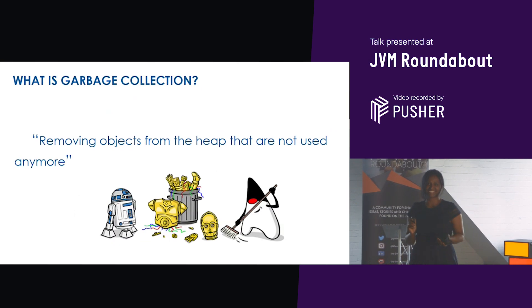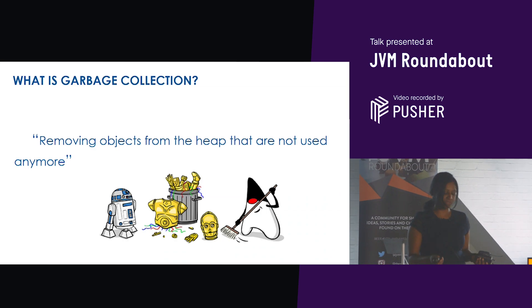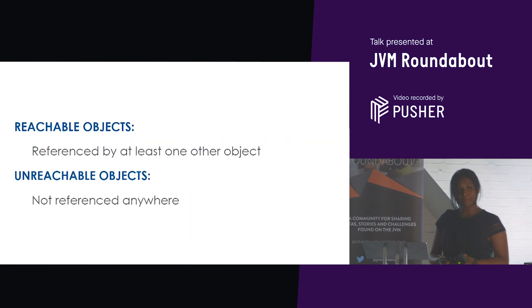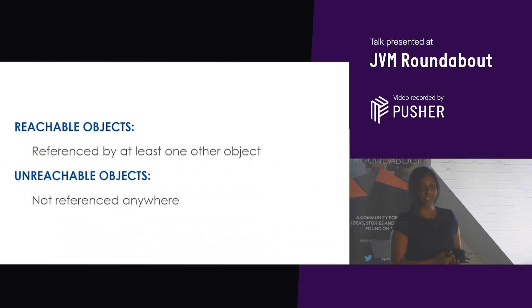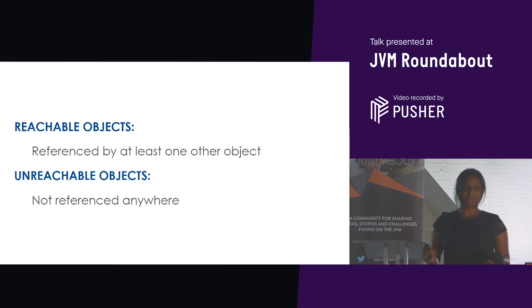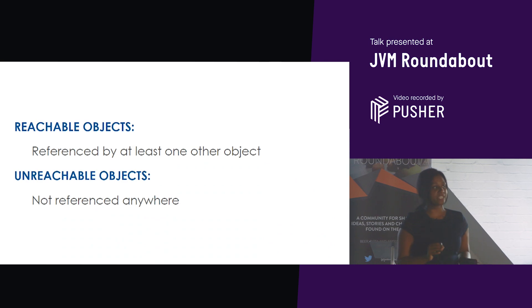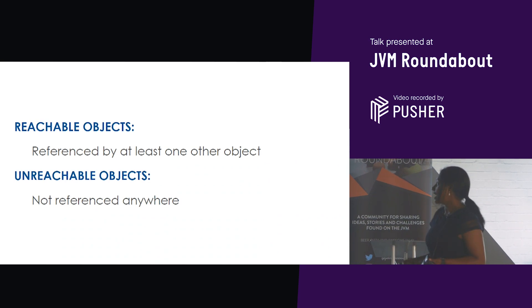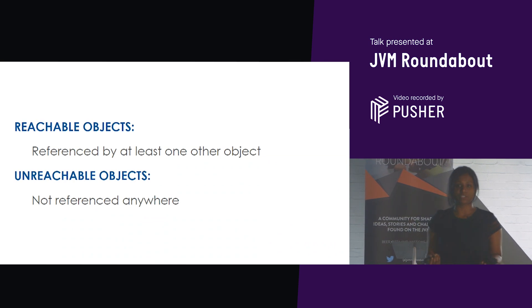What is garbage collection? Garbage collection is the process of removing objects from the heap that are no longer used. There are two types of objects: reachable objects and unreachable objects. Reachable objects are live objects that are being referenced by at least one other object within your application. If you traverse through all these references, you will reach the root node of your application, which creates the object graph. Unreachable objects are objects that are no longer referenced by any objects in your application.